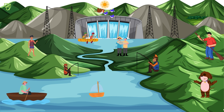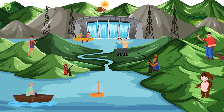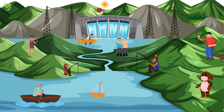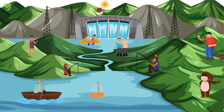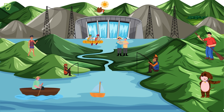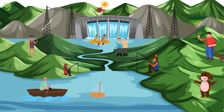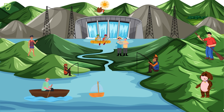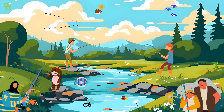But first things first — what exactly are ocean rivers? Unlike the rivers we are familiar with on land, ocean rivers are large-scale currents that flow through the world's oceans. These currents are driven by a variety of factors including wind, temperature, and salinity.